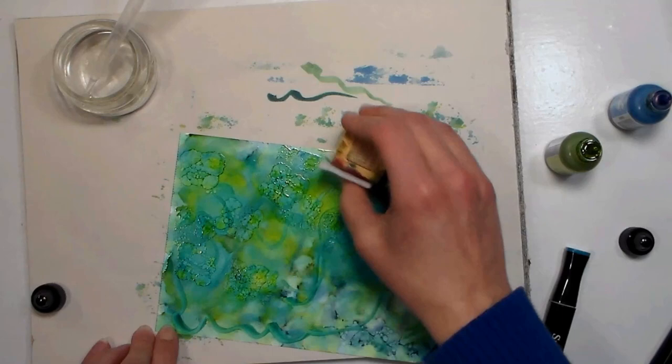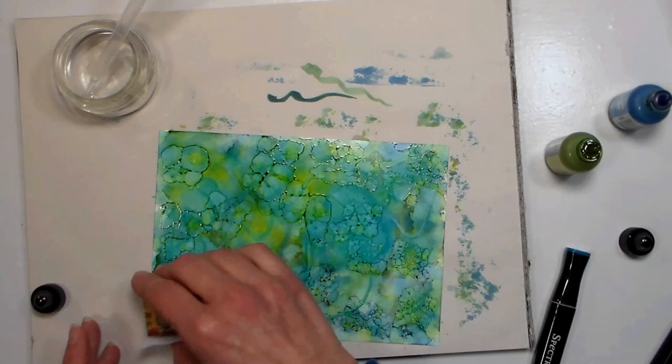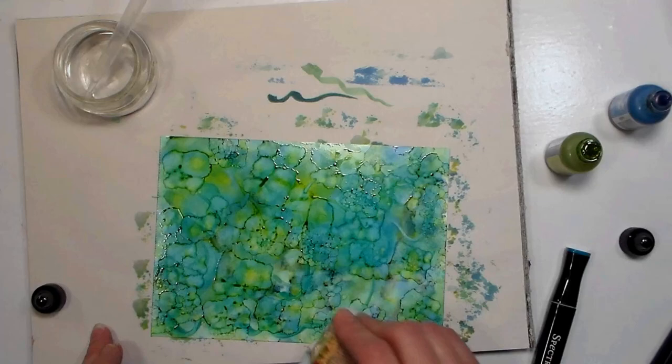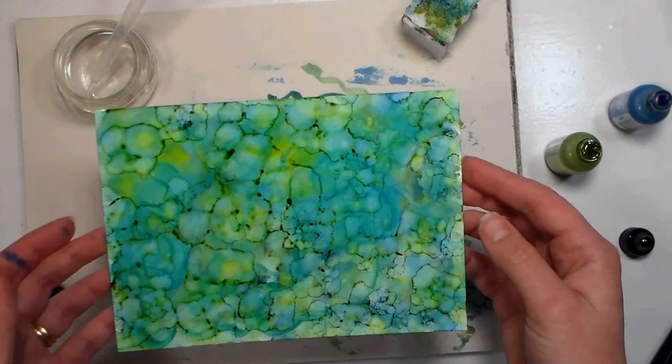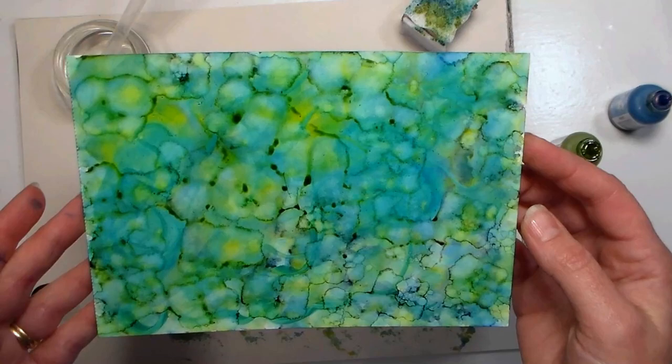I'm going to go back in with a little bit more alcohol ink, because I just wanted to have some more smaller dots. You'll find that the wetter your paper is, the more your colors are going to blend together. As the bottom layer of ink starts to dry, and you go and tap more on like I'm doing here, you're going to get those small little bubbly look, and you're going to get that more distinct look.